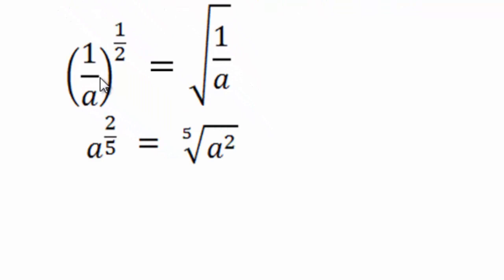a to power two-fifths. So now we no longer have one over something. When that happens, that two, the exponent of two, stays inside with the a squared. And the index is the five. Everybody see that?